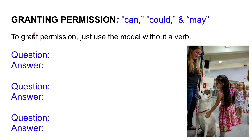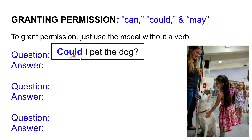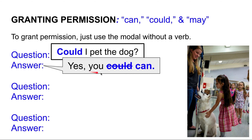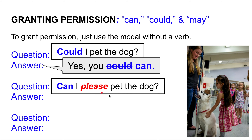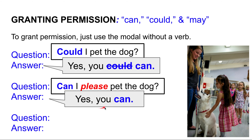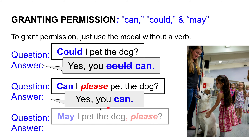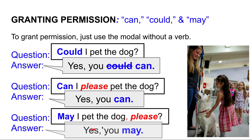To grant permission, just use the modal without a verb. For example: 'Could I pet the dog?' — 'Yes, you can.' 'Can I please pet the dog?' — 'Yes, you can.' 'May I pet the dog, please?' — 'Yes, you may.'